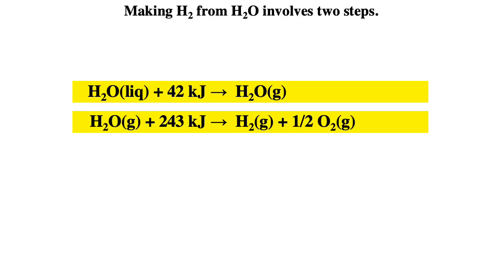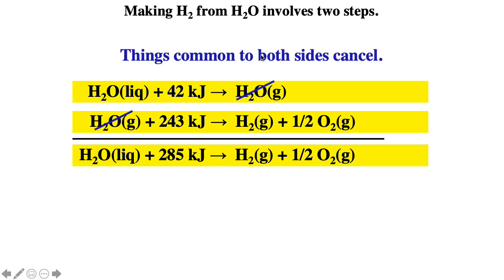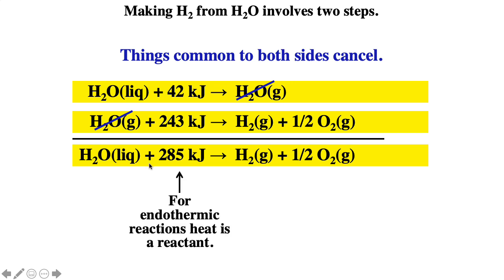Looking at another example: we can make hydrogen gas from water in two steps. Liquid water plus 42 kJ/mol gives gaseous water, and gaseous water plus heat gives hydrogen gas plus oxygen gas. To find delta H for the net reaction, we add these two reactions and add the corresponding heat values, giving a total of 285 kJ of heat. Things common on both sides cancel — the gaseous water cancels — giving us the net reaction. For endothermic processes, heat is a reactant going from the surroundings to the system.